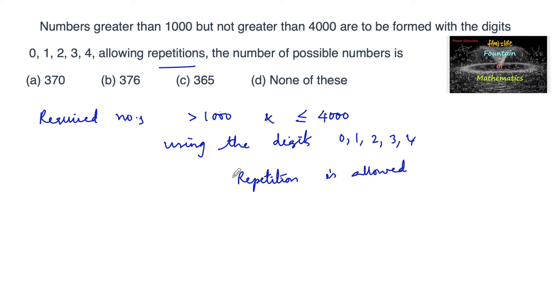The possible numbers between 1000 and 4000 are 4-digit numbers in which the first place cannot be 0.